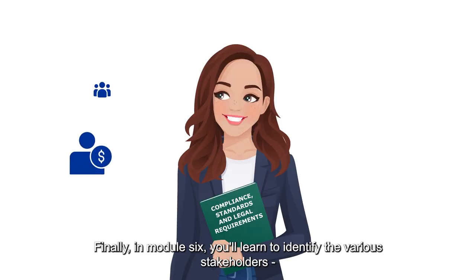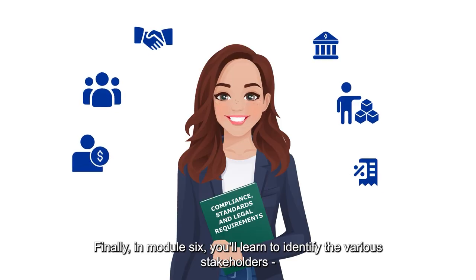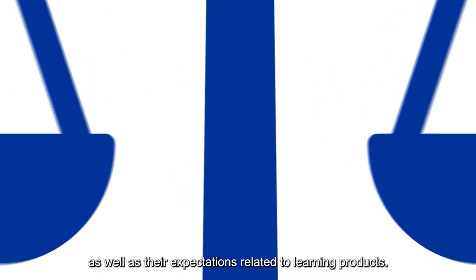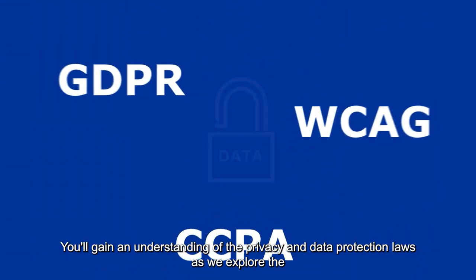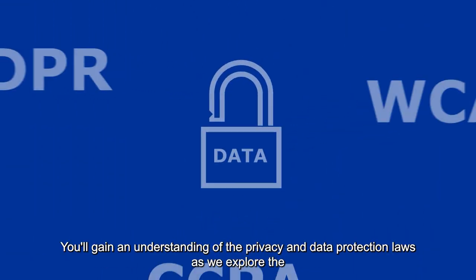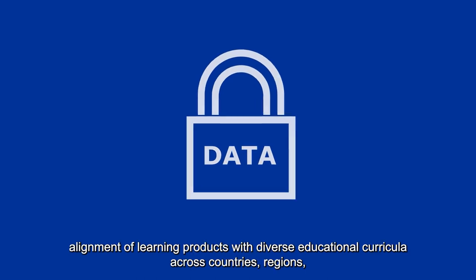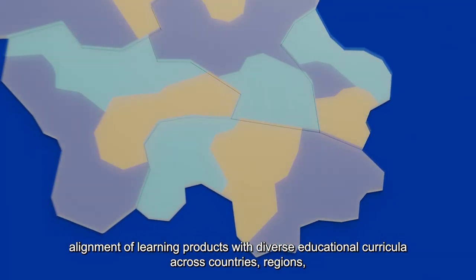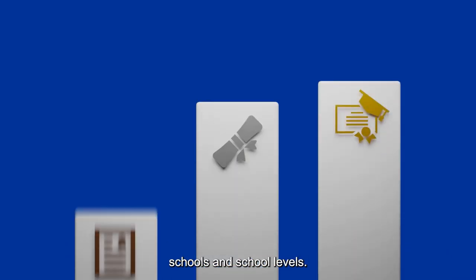Finally, in module 6, you'll learn to identify the various stakeholders as well as their expectations related to learning products. You'll gain an understanding of the privacy and data protection laws as we explore the alignment of learning products with diverse educational curricula across countries, regions, schools, and school levels.